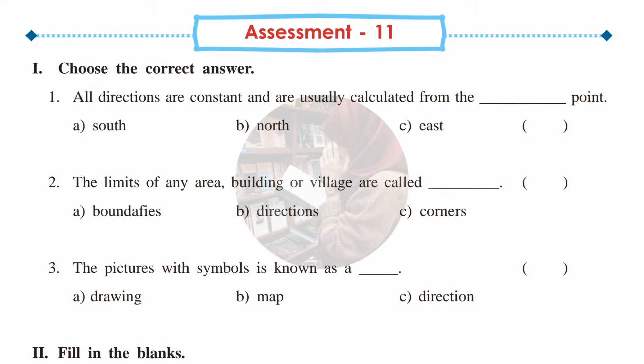Assessment number 11, choose the correct answers: First — all directions are usually calculated from the dash point. Answer: B — north point. Second — the limits of any area, building, or village are called boundaries. Note: there is a spelling mistake in 'boundary' in the workbook — please correct it.